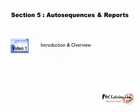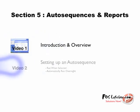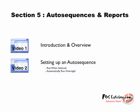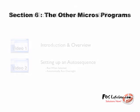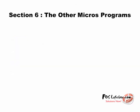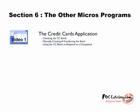Section 6 covers working with credit cards, transaction analyzer, and EJ organizer. In this section, we'll deal with responding to chargebacks, theft prevention, and checking to make sure your credit cards are batching out correctly.